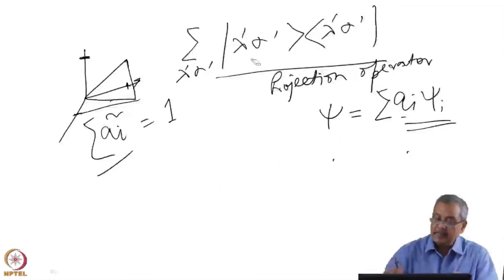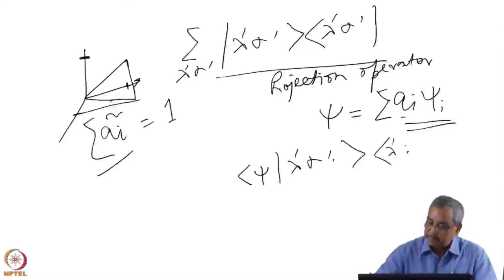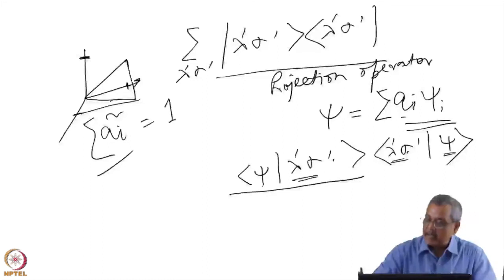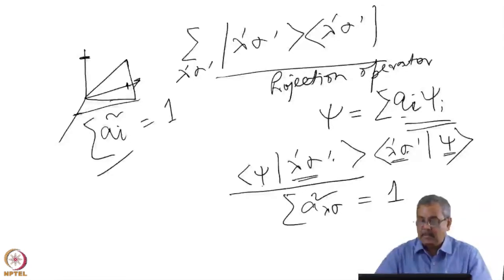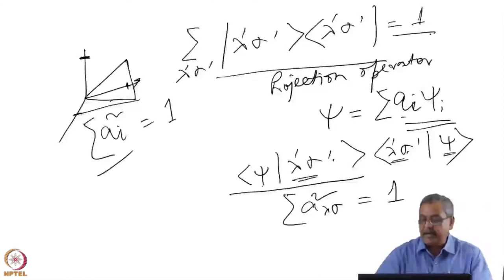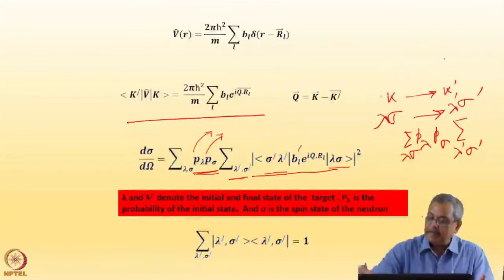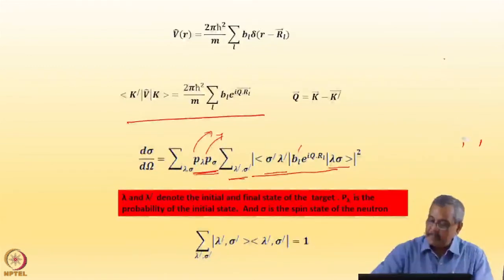For the wave function here, if I pre-multiply and post-multiply with a wave function, this is nothing but the component of the wave function projected on this basis component. I can call it a_i or a_lambda-sigma. This double multiplication gives me a_lambda-sigma squared, which equals one. That is why in normal quantum-mechanical parlance I call this sum of the projection operator equal to one. So how it helps me is that I can take the sum over all final states and set it equal to one.